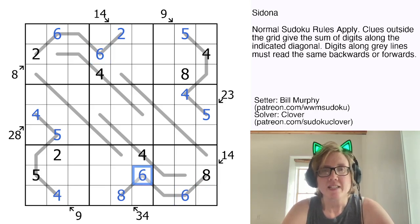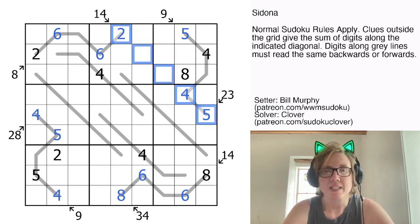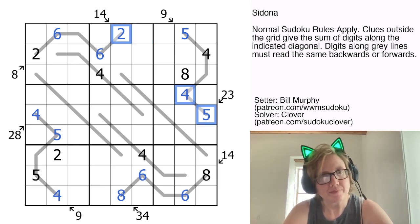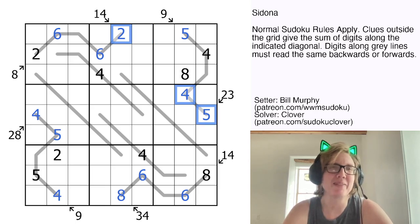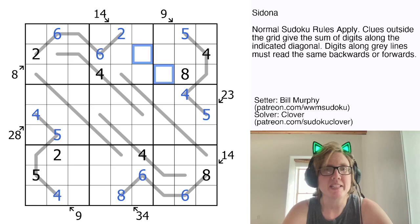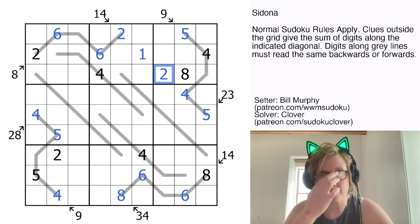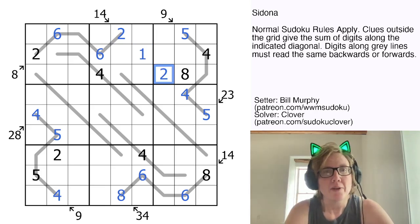So the next most restricted clue from the looks is going to be this 14 here, because 14 is a pretty small sum to make out of 5 digits. I already have a 2, a 4, and a 5, that's a total of 11. So I need 3 more, so I'm going to need a 1 and a 2 to make a sum of 3. So the 1 has to go there because that can't be the 2, and then I'm going to place a 2 right there.